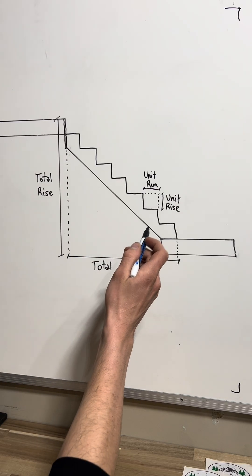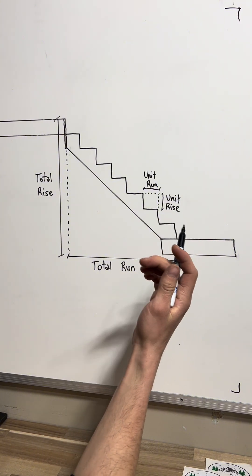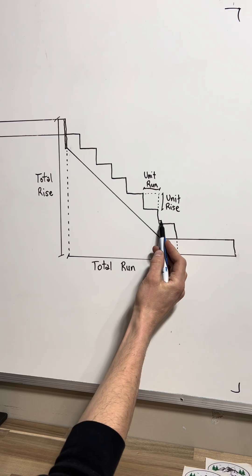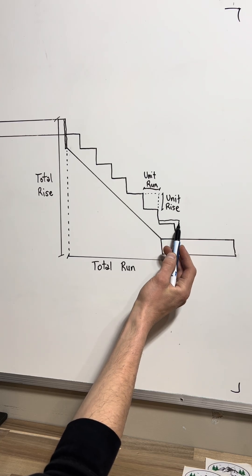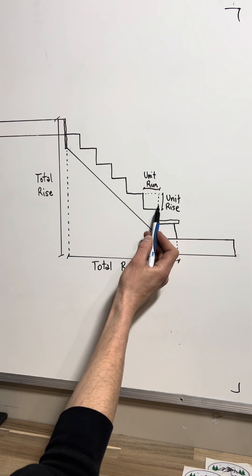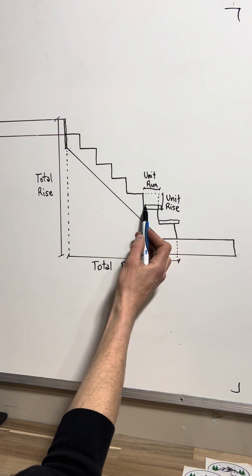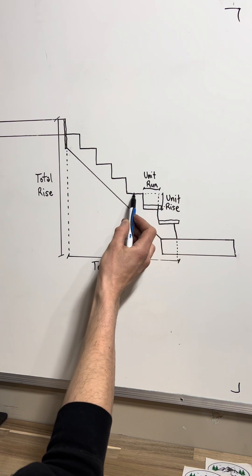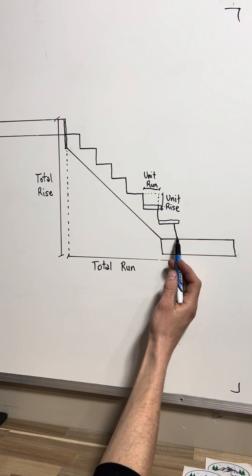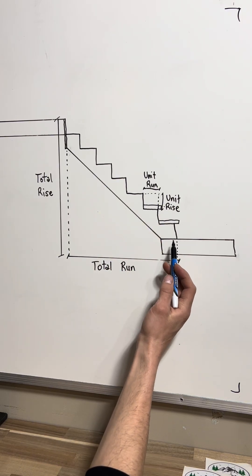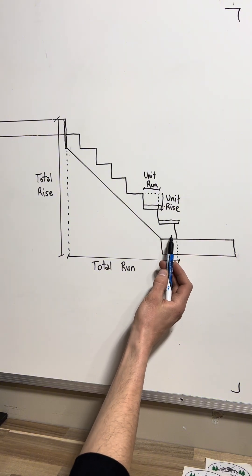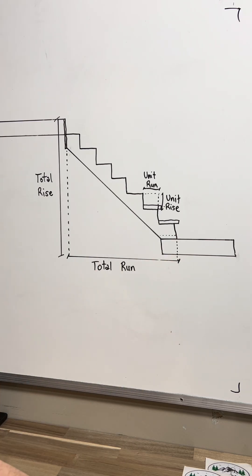The last thing we need to consider is our adjustments. Once we start adding treads on — say we're adding an inch-and-a-half tread on everything — all those intermediate steps stay the same height. The problem is we're not going to put a tread on the bottom. So you have to account for whatever thickness your tread is going to be, and remove that amount off your stringer first.